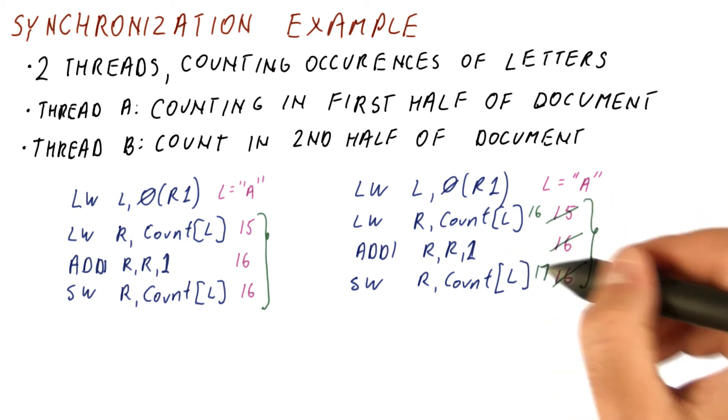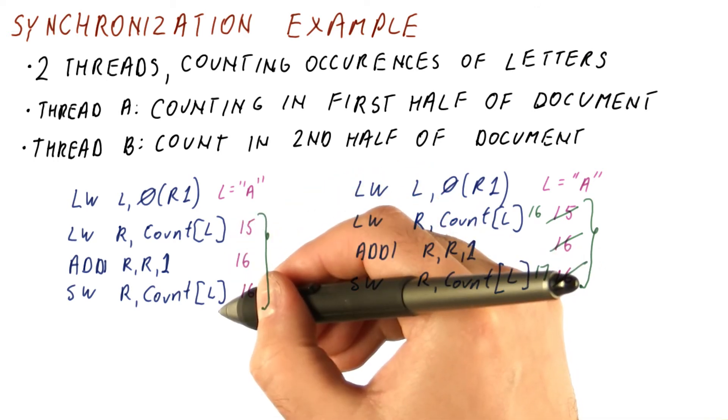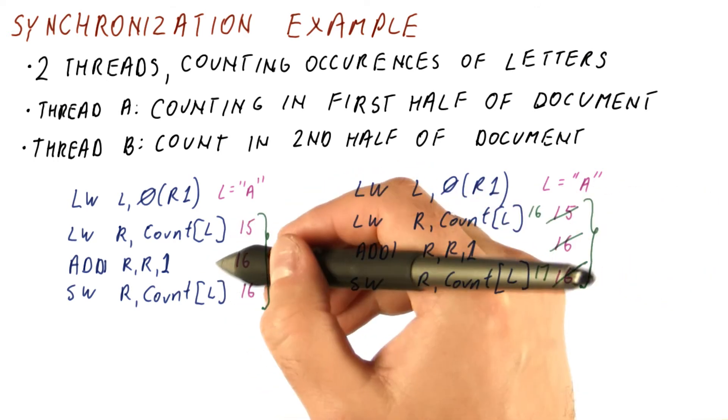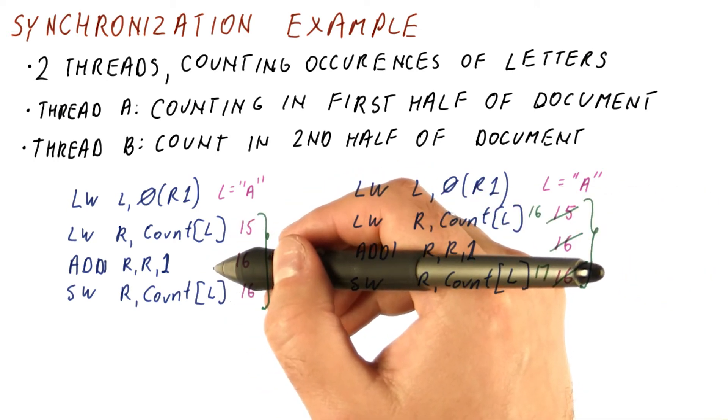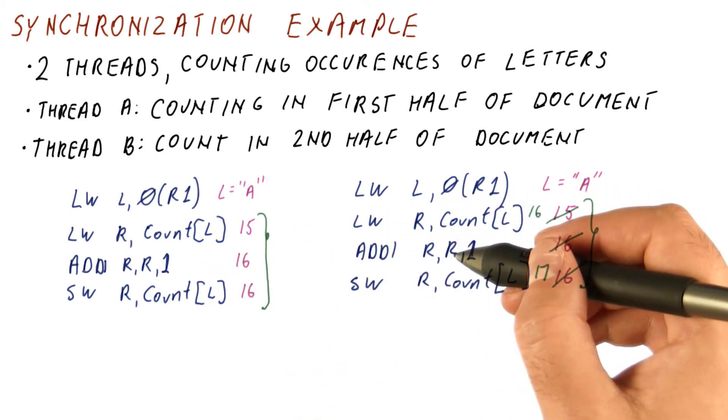Similarly, if we did this first, it would produce 16 in memory, then we would load that and increment to 17. So no matter which one of these happens first, we should get the correct result, but we don't get the correct result if they happen in an interleaved fashion.